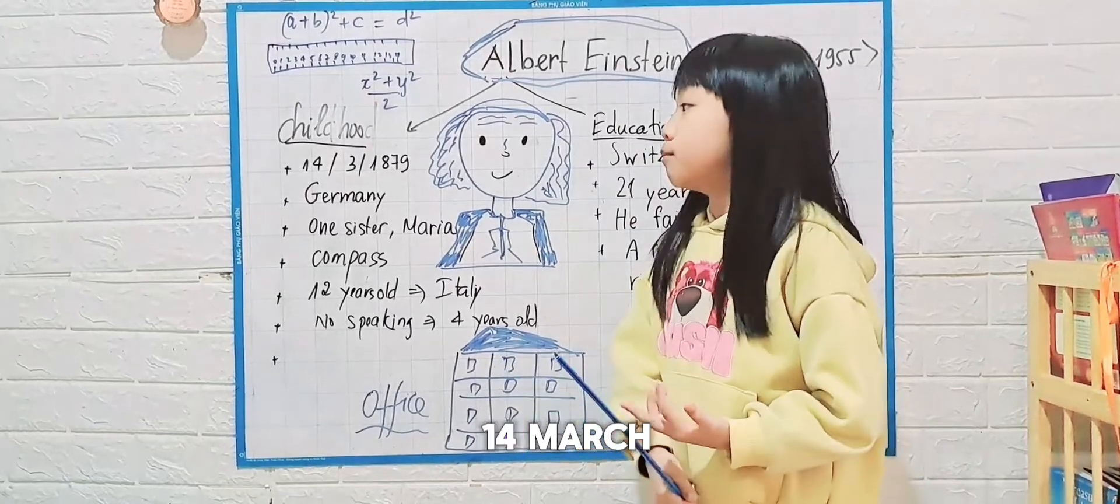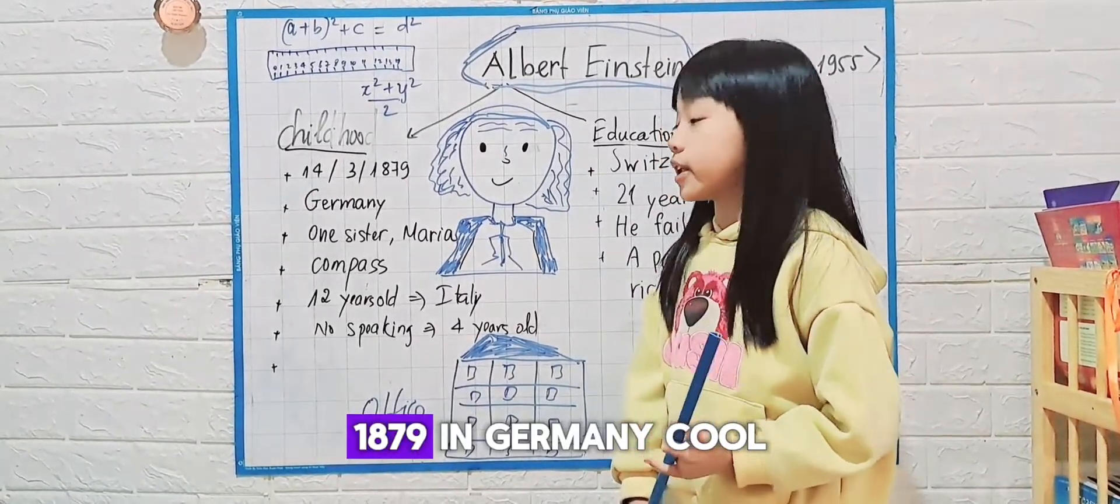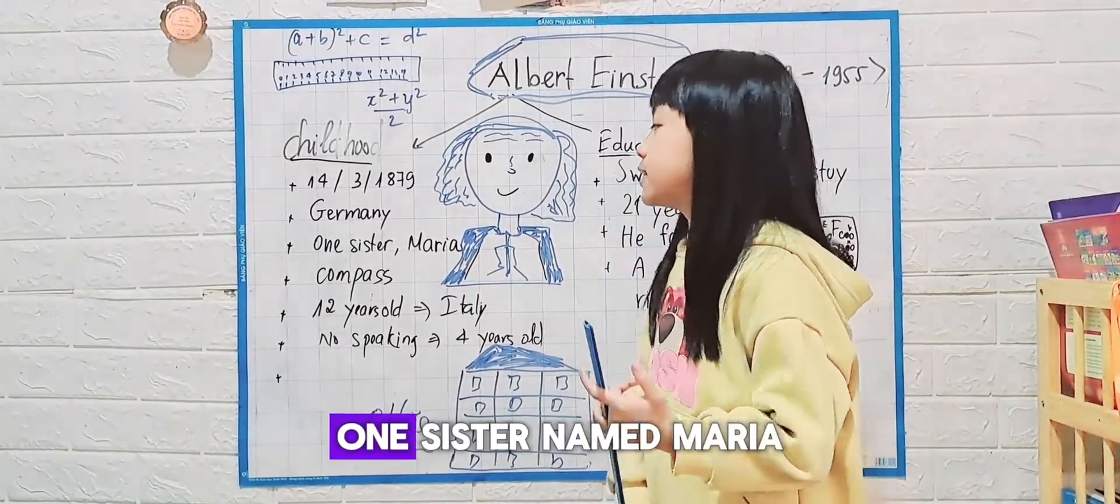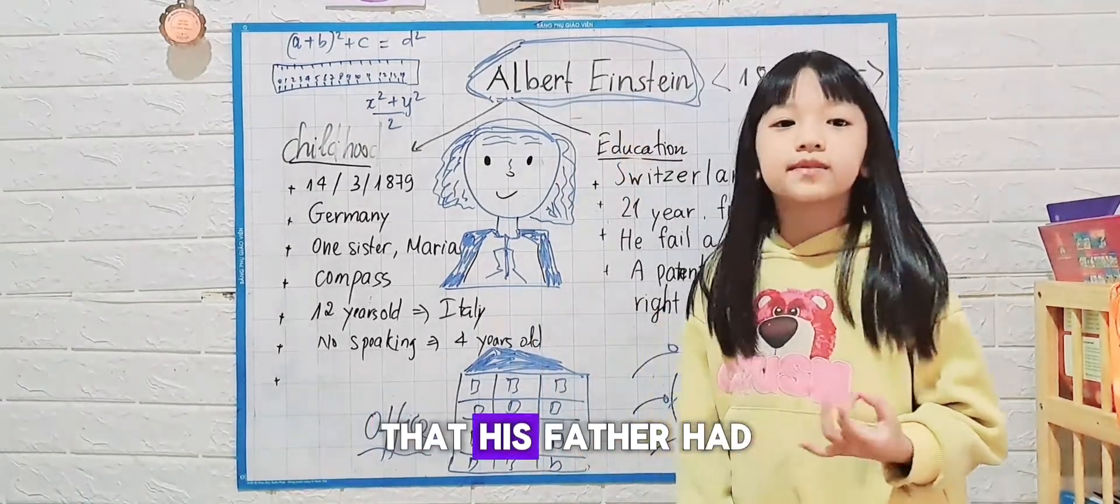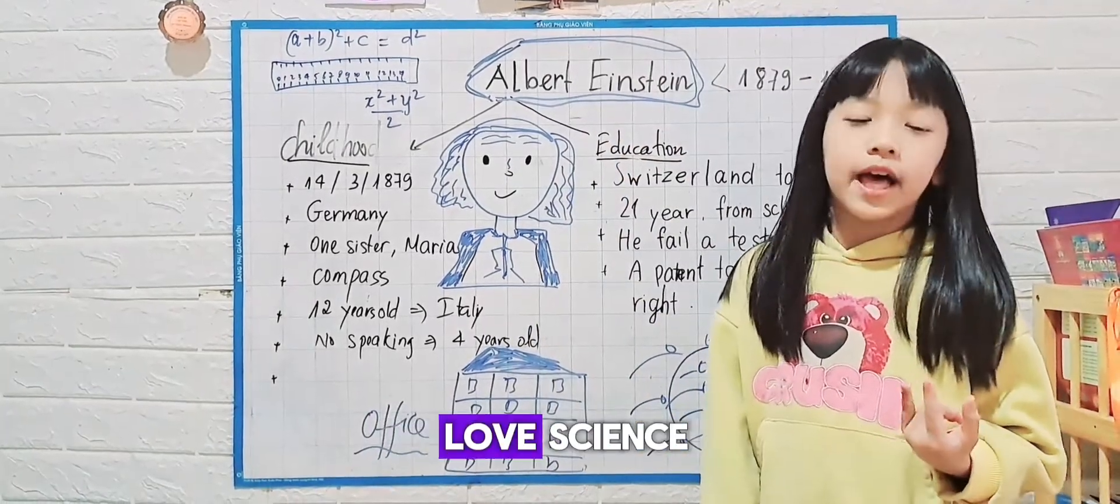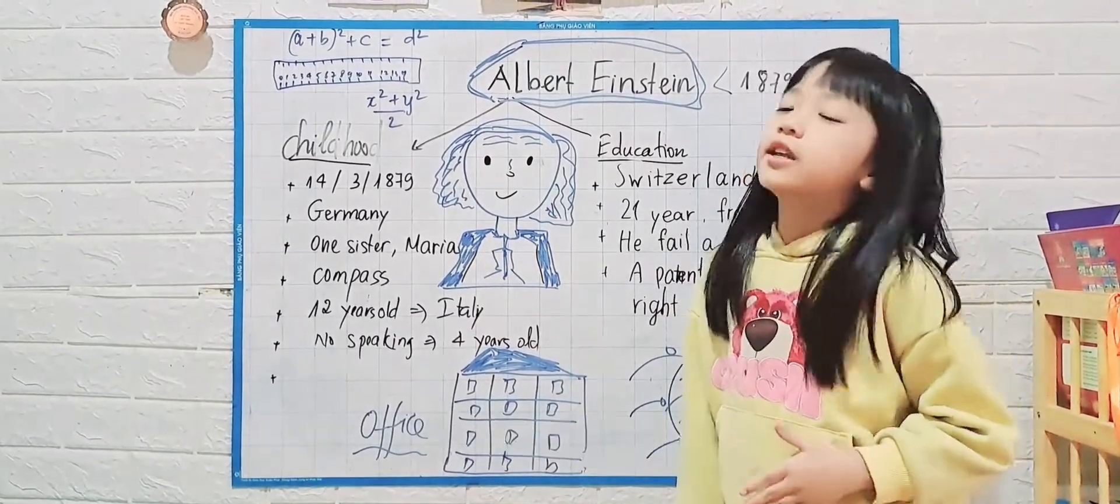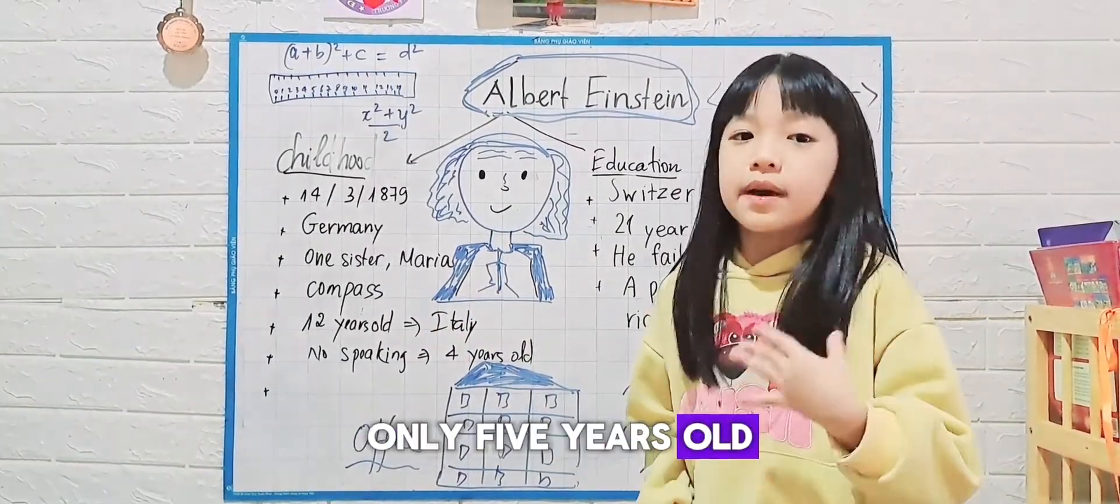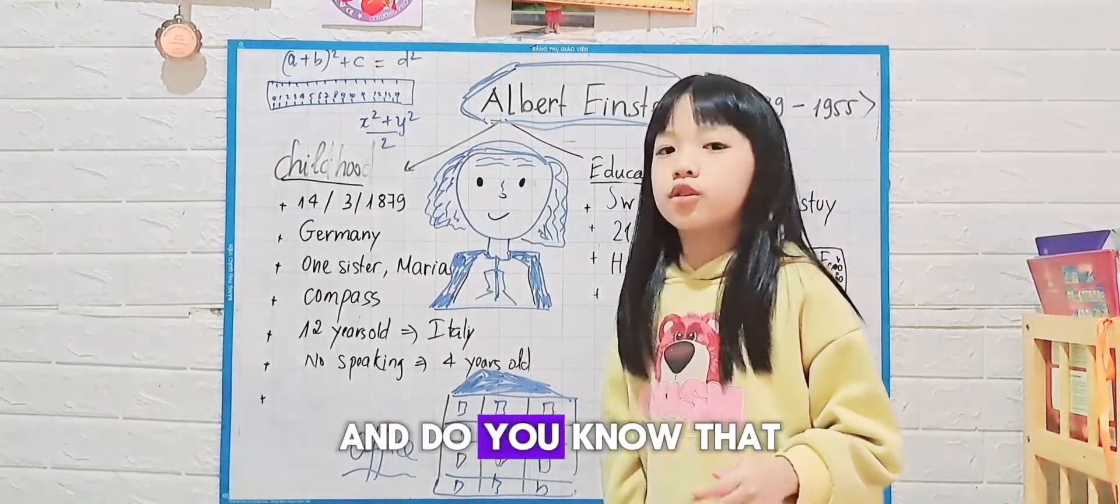Albert Einstein was born on March 14, 1879 in Germany. He had one sister named Maria. His father had a lot of science interest, and when Einstein was only five years old, his father gave him a compass.